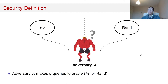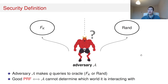We focus on PRF security, so we define an attack game. At the beginning of the game, one of the two worlds is chosen: the real world on the left side and the ideal world on the right side. The construction oracle in the real world is the oracle construction f_K, while the ideal world oracle is a random function. The adversary A makes Q queries to the given oracle. We require that A will not repeat its query, since asking the same input yields the same output. After A's communication with the oracle, it must state which of the two worlds it was given access to. If A cannot do so, we can deduce that the given construction is a secure PRF.